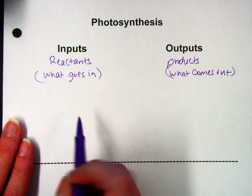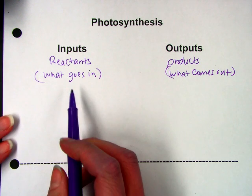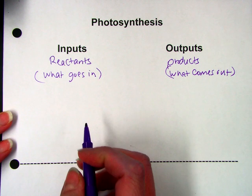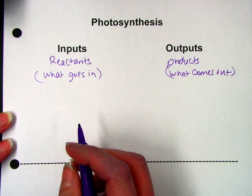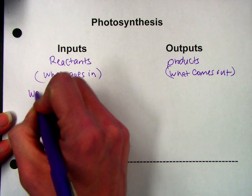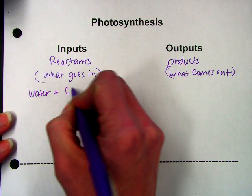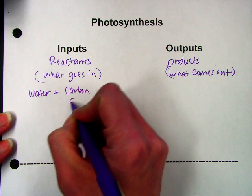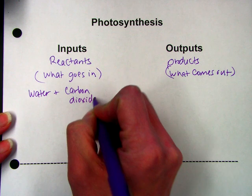So for photosynthesis we have three inputs, three reactants. You can think about this in terms of some things that plants need. Plants need three big things: they need water, they need carbon dioxide, and they need the sun.